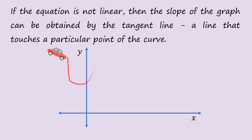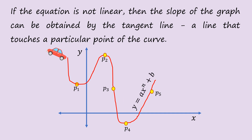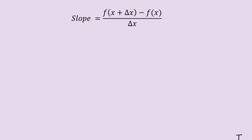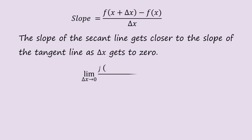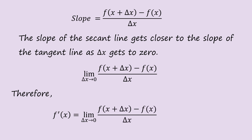Let's consider this graph. We see that the line is not a straight line, so it is not linear. But we can identify points p1, p2, p3, p4, and p5. The equation is y = ax^n + b. If n is 1, it becomes linear; but here it is not linear, so we use the tangent line. The slope equals [f(x + Δx) − f(x)] / Δx. The slope of the secant line gets closer to the slope of the tangent line as Δx approaches 0. Therefore, the derivative is the limit as Δx → 0 of [f(x + Δx) − f(x)] / Δx.